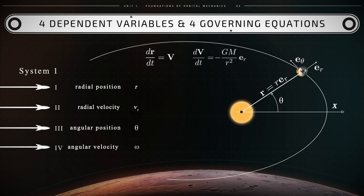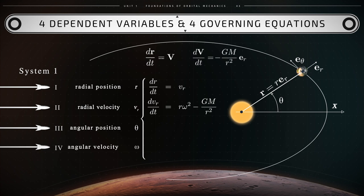Obtained from the previous two vector equations, the final four equations are: the rate of change of r with respect to time equals vr; the rate of change of vr with respect to time equals r omega squared minus GM over r squared; the time rate of change of theta equals omega; and the time rate of change of omega equals negative vr times omega over r.